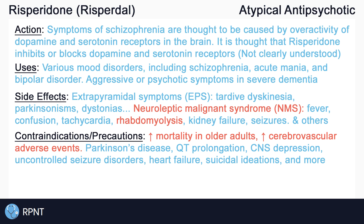Risperidone may also cause QT prolongation, which can be seen on an ECG, so precaution should be used if a client already has QT prolongation. Caution should also be exercised in clients with severe CNS depression, uncontrolled seizure disorders, heart failure, suicidal ideations, and more.